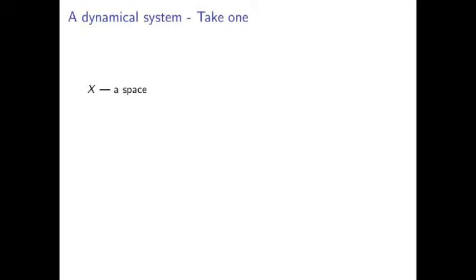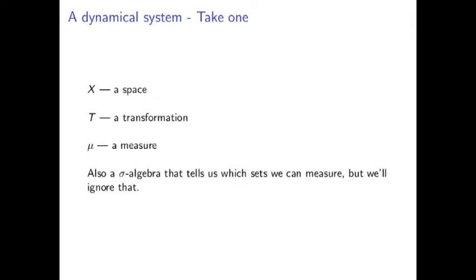To begin talking about ergodic theory, we first have to talk about dynamical systems and what they actually are. Now, I'm going to start very abstract, but I'll quickly move to a concrete example. A dynamical system is a mathematical object that evolves over time. It consists of three things: a space, a transformation, and a measure. Technically, also a sigma algebra, but that's really complicated, and we're not going to get into it.